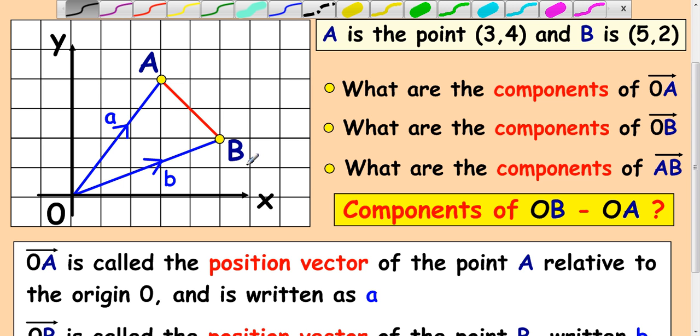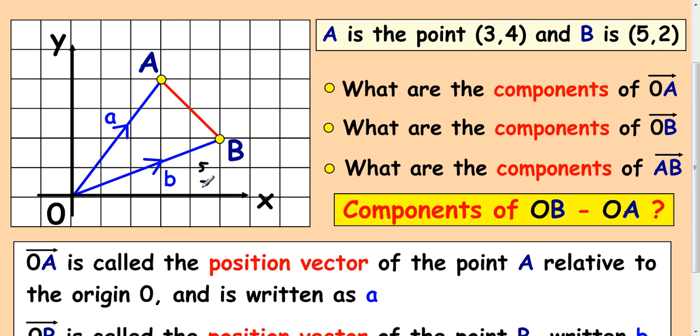Now B, excuse my writing here, is (5,2) and A is (3,4).